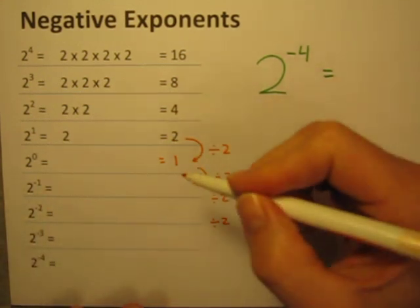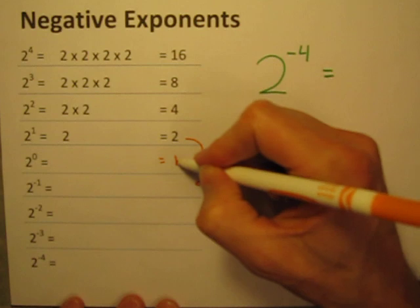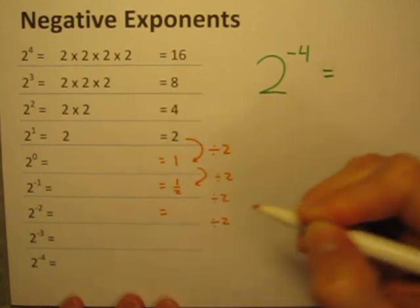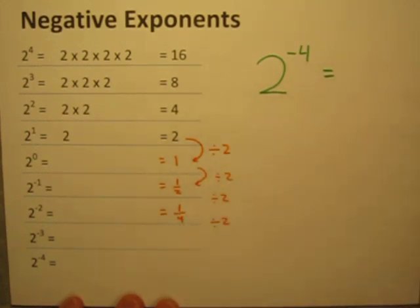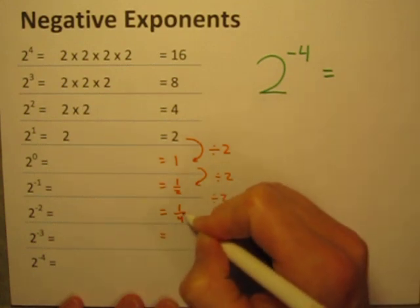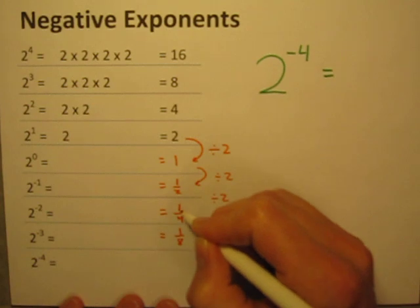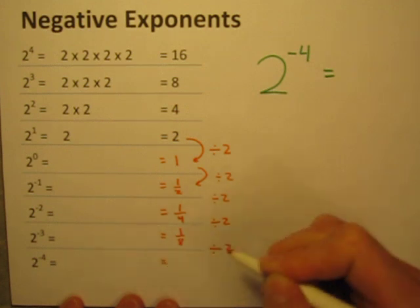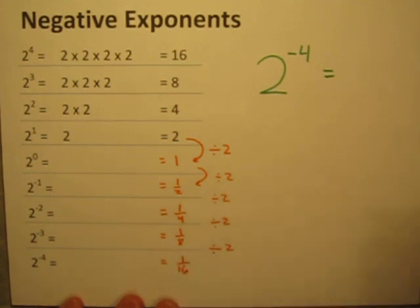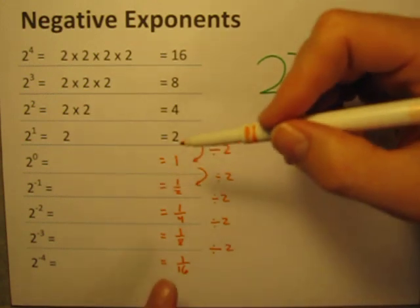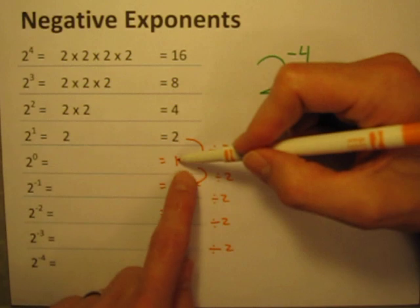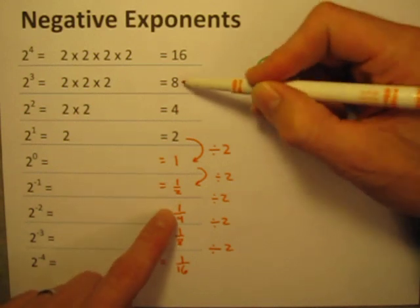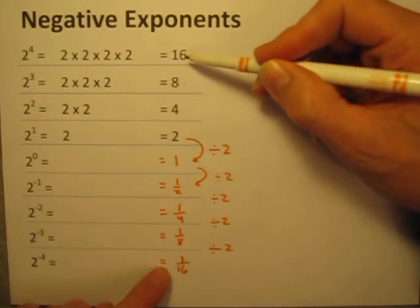Let's keep going with that same pattern of dividing by 2. What's half of 1? That's 1 half. Half of a half is 1 quarter. Half of a quarter is 1 eighth. And half of 1 eighth is 1 sixteenth. You can definitely see symmetry on either side of 2 to the 0 power: go up 1 and we get 2; here we get 1 over 2. There's 4 and 1 over 4. There's 8 and 1 over 8. There's 16 and 1 over 16.